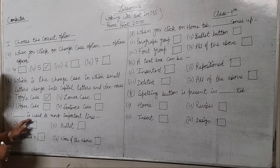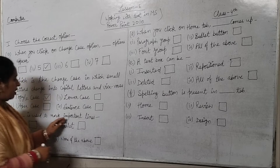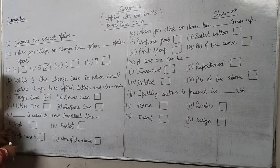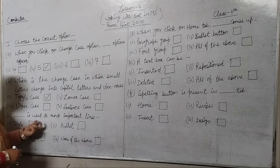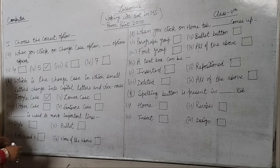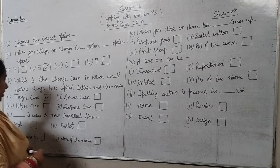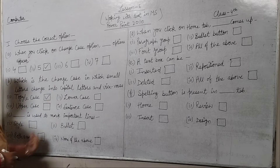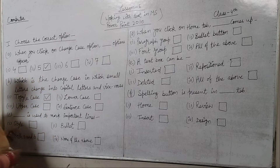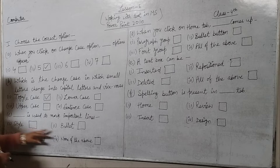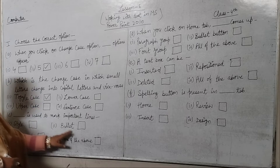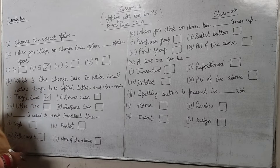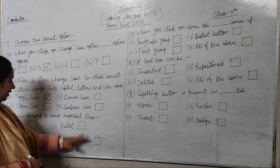Part C is: what is used to mark portrait lines? Options are Style, Bullet, both A and B, or none of the above. The portrait lines will be marked using Bullet.